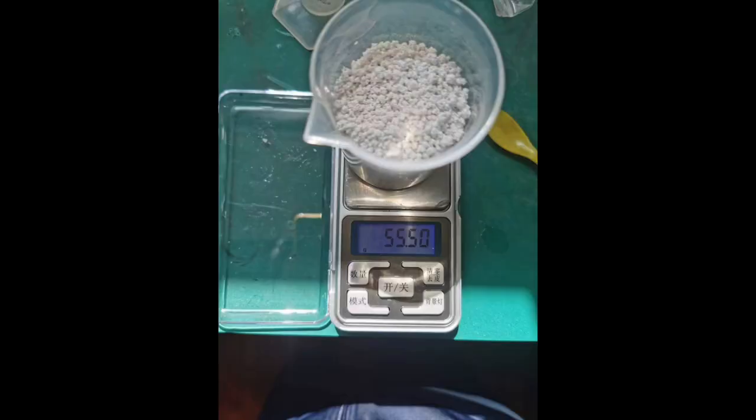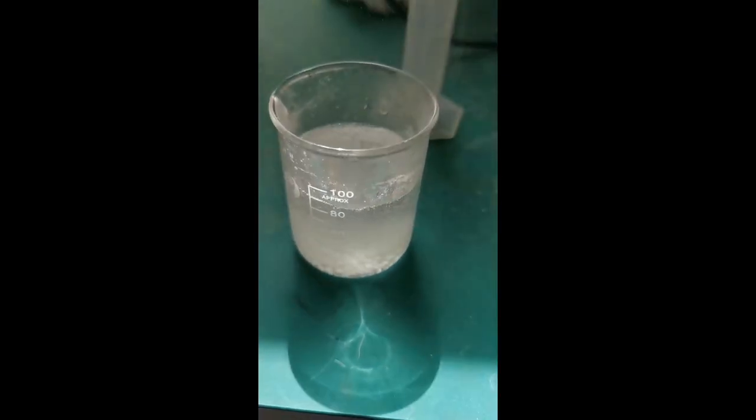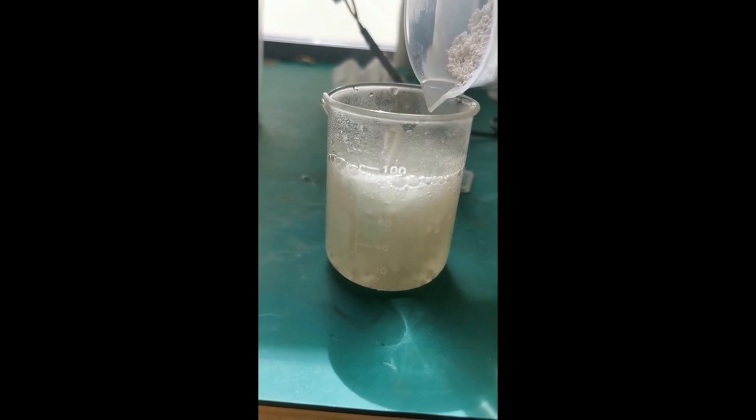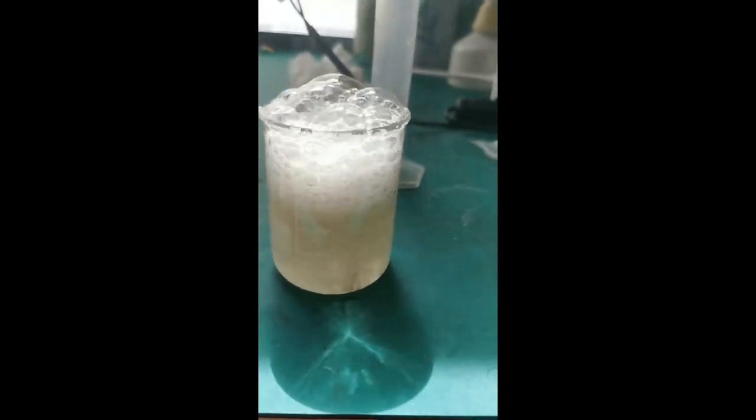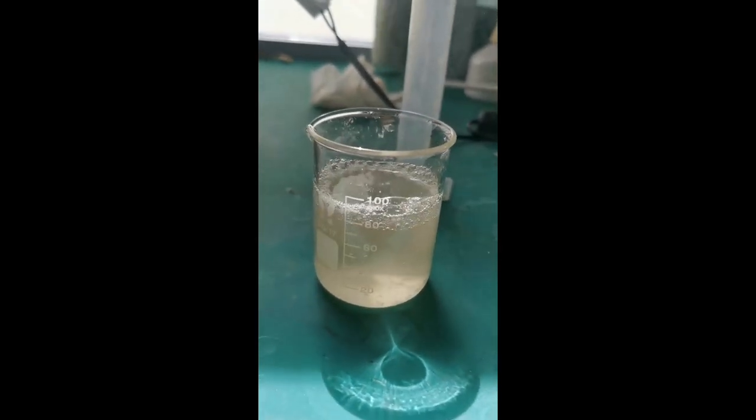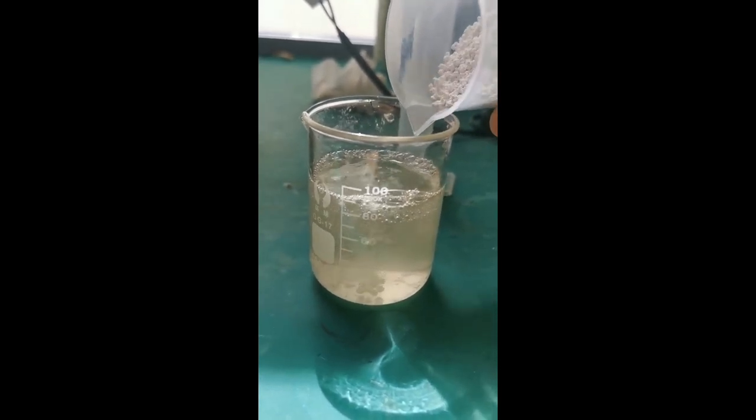I measured out 55.5 grams of anhydrous calcium chloride, which is about half a mole, and dissolved it in 80 milliliters of boiling water. The addition of anhydrous calcium chloride to water is extremely exothermic, and caused the solution to boil. This actually further increases the solubility of the salt, which makes the dissolution very fast. In fact, I didn't even have to stir the solution to dissolve all of them.